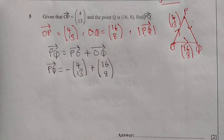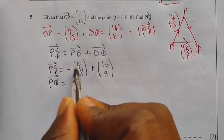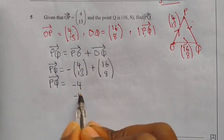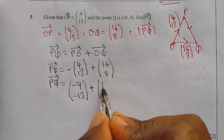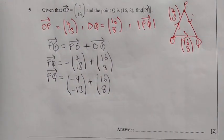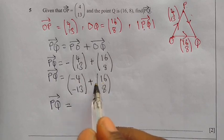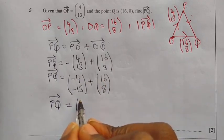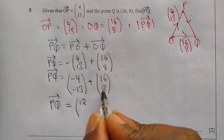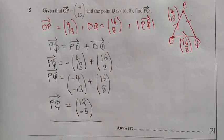So PQ equals negative 4, negative 13 — from applying the negative to OP — plus 16, 8. Computing: negative 4 plus 16 gives 12, and negative 13 plus 8 gives negative 5. So the vector PQ is 12, negative 5.